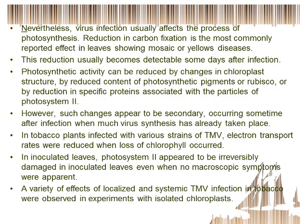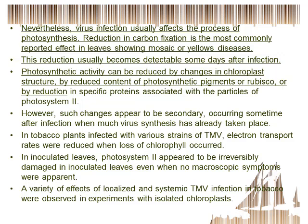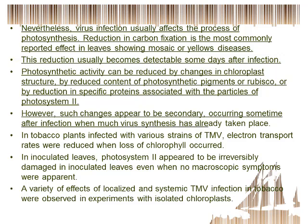Nevertheless, virus infection usually affects the process of photosynthesis. Reduction in carbon fixation is the most commonly reported effect in leaves showing mosaic or yellow diseases. This reduction usually becomes detectable some days after infection. Photosynthetic activity can be reduced by changes in chloroplast structure, by reduced content of photosynthetic pigments, by reduction in RuBisCO, or by reduction in specific proteins associated with the particles of photosystem 2. However, such changes appear to be secondary, occurring sometime after infection when much virus synthesis has already taken place.